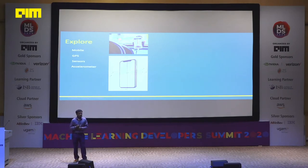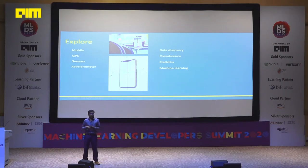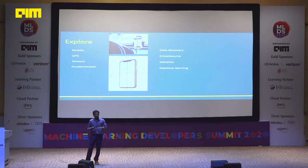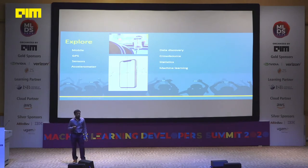We looked at the data coming from these devices — the device orientation events like alpha, beta, and gamma — and saw how the data was coming in. Based on that we did a simple POC first, and once we started getting results we were convinced that, like an activity tracker that tracks your steps in the phone, we can also track various road conditions using these sensors. That's when we thought we'd crowdsource the data from many friends.